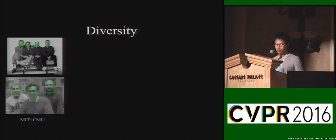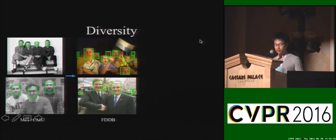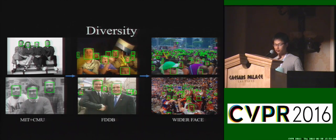If we look at the big picture, the diversity of face appearance has dramatically increased over time. The MIT plus CMU dataset consists of grayscale frontal faces; however, this dataset cannot meet the demand of developing multi-view face detection algorithms. Therefore, later face detection datasets, for example FDDB, involve faces with larger variations in pose and occlusion. But current state-of-the-art face detection algorithms still cannot handle large-scale variations, heavy occlusions, and extreme illuminations. To further motivate the development of face detection, we propose the WiderFace dataset that includes faces with large variations in scale, occlusion, pose, illumination, and expression.